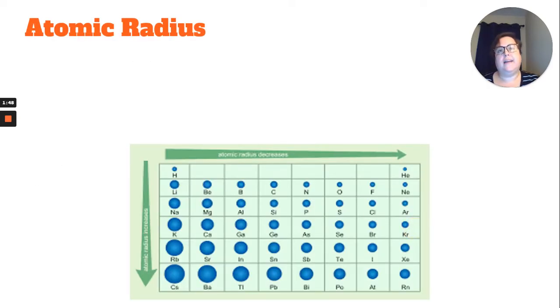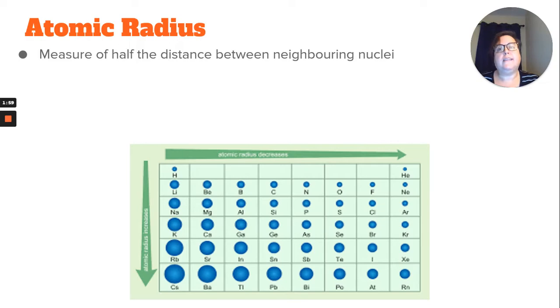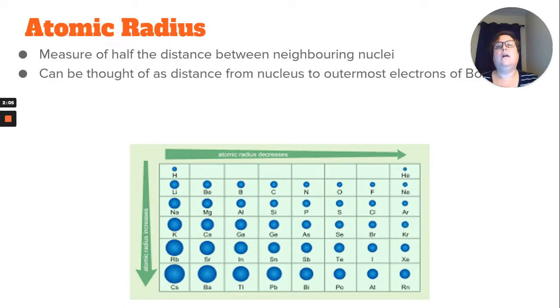So the first trend we have is probably the most important, and it kind of explains all the other trends, is atomic radius. Now there's different ways of defining atomic radius. The first way is to say that it's the measure of half the distance between neighboring nuclei. It can also be thought about as the distance from the nucleus to the outermost electrons, or the valence electrons. But it's really just the size of the atom.